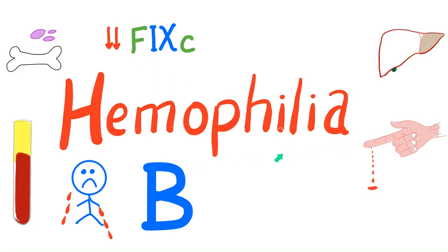Hey guys, it's your favorite medical channel, Medicosis Perfectioneros, where medicine makes perfect sense. Let's resume our playlist on bleeding and coagulation disorders. In the previous video, I talked about hemophilia A, which had a problem with factor VIII. Today, we'll talk about hemophilia B, with a problem in factor IX. So let's get started.